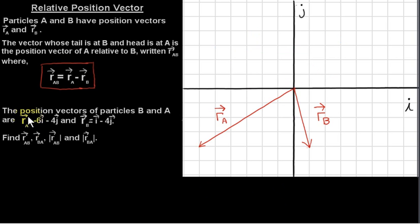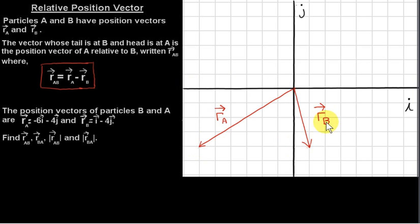Let's look at an example. The position vectors of particles A and B are RA equals minus 6I minus 4J, and RB equals 1I minus 4J. So here is RA: we go to minus 6 on the i-axis and minus 4 on the j-axis to get the coordinates of the head. As for RB, the coordinates of the head are plus 1, minus 4.